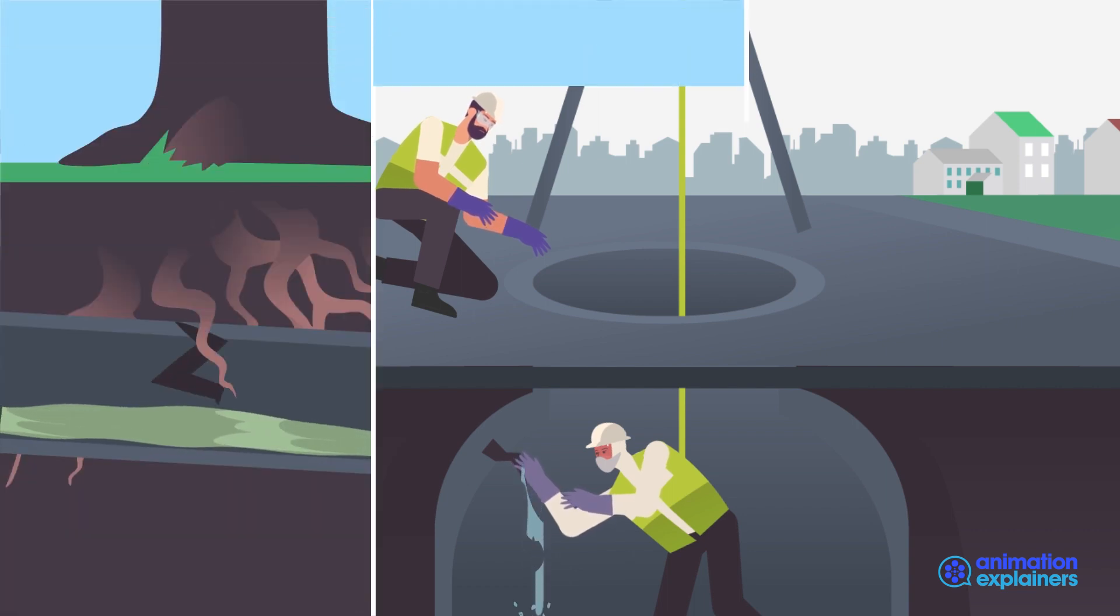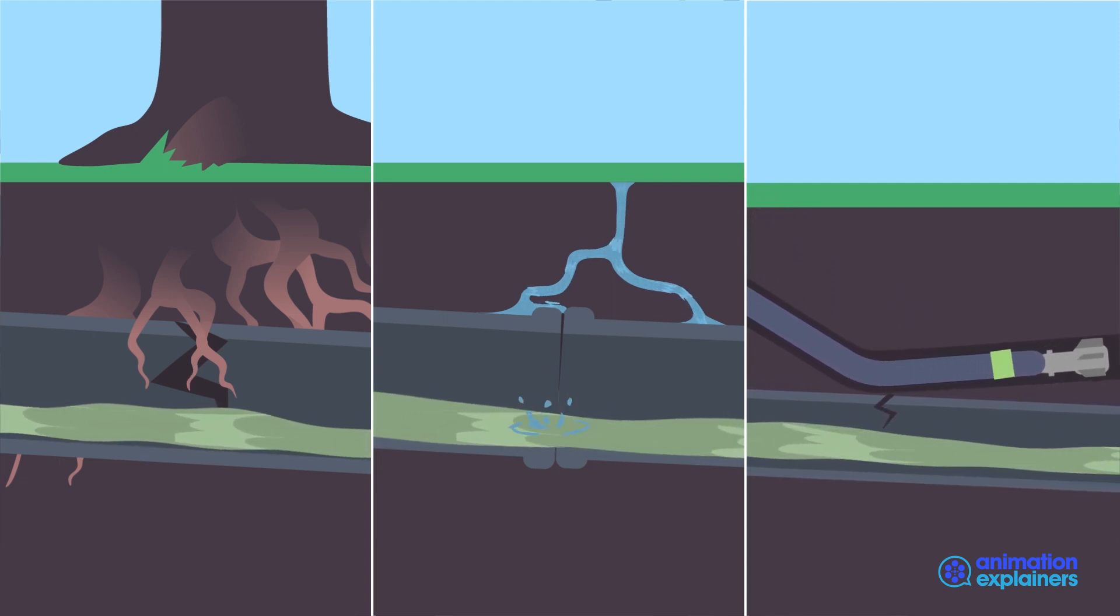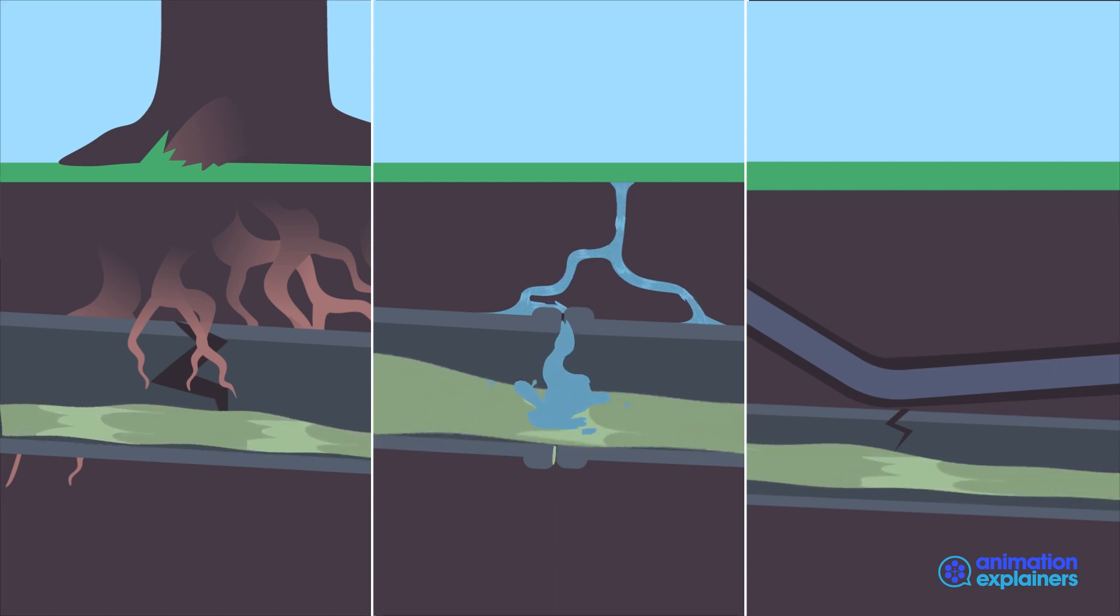The risk to effective sewer system operation from inflow and infiltration issues only gets worse as the systems age. The cumulative impact of small leaks can amount to millions in treatment costs per year. To prevent and repair these kinds of issues,